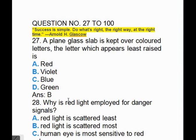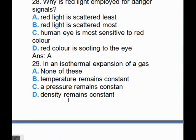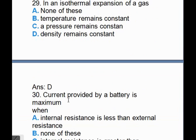In an isothermal expansion of a gas, D, density remains constant. Current provided by a battery is maximum when, answer is D, internal resistance is equal to external resistance.